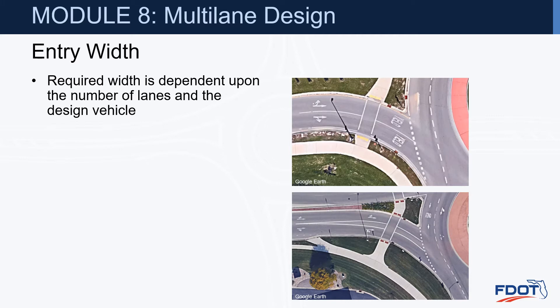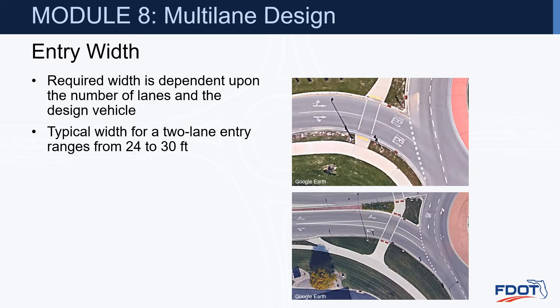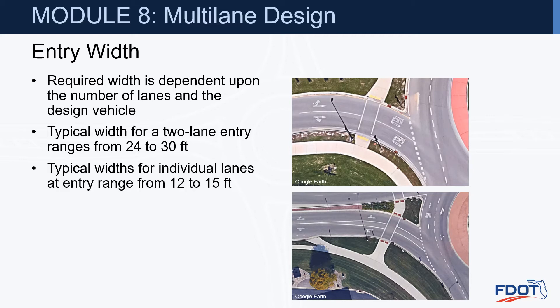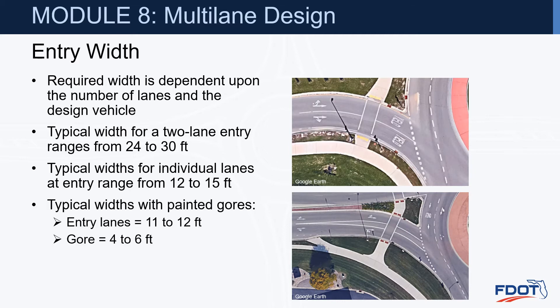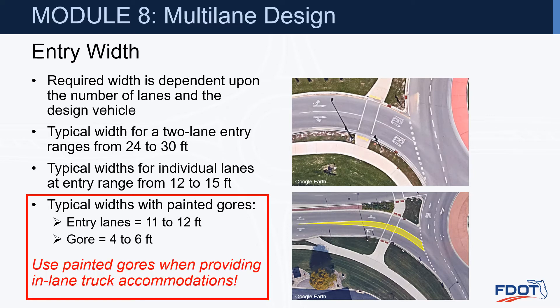Entry width. The required width is dependent upon the number of lanes and the design vehicle. Typical width for a two-lane entry ranges from 24 to 30 feet. Typical width for individual lanes at entry ranges from 12 to 15 feet. With painted gores, entry lanes are in the 11 to 12-foot range with gores in the 4 to 6-foot range. Painted gores should be used when providing in-lane truck accommodations.